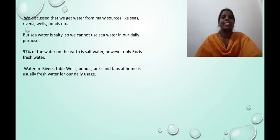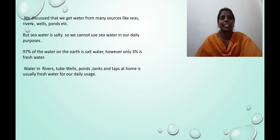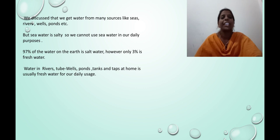We get water from many sources like seas, rivers, wells, ponds, etc. But seawater is salty, so we cannot use seawater for our daily purposes. 97% of the water on the earth is salt water. However, only 3% is fresh water. Water in rivers, tube wells, ponds, tanks, and taps at home is usually fresh water for our daily usage.